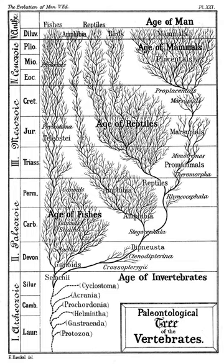The Modern Evolutionary Synthesis was based on the concept that populations of organisms had significant genetic variation caused by mutation and the recombination of genes during sexual reproduction. It defined evolution as the shift of gene frequencies within a population caused by random genetic drift, gene flow between subpopulations, and natural selection, with natural selection emphasized as the most important mechanism. Large changes were the result of the gradual accumulation of small changes over long periods of time.